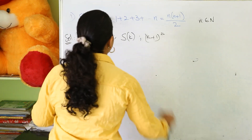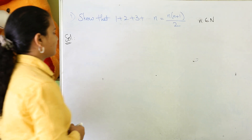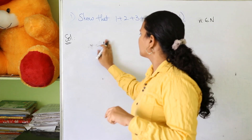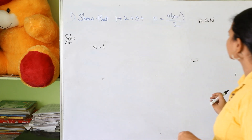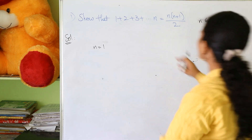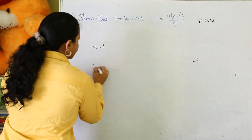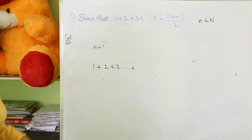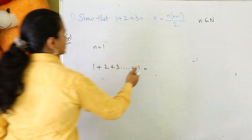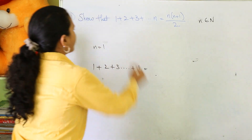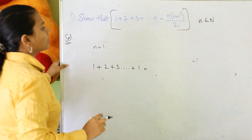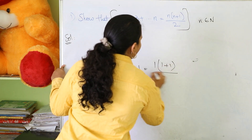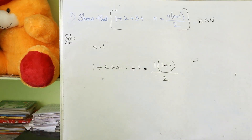Let's start with the first case. Consider n equal to 1. If n equals 1, then for the LHS we just have 1. For the RHS, you take the equation n into n plus 1 by 2, and replace n with 1. So you get 1 into 1 plus 1 by 2, which gives us 1 into 2 by 2.